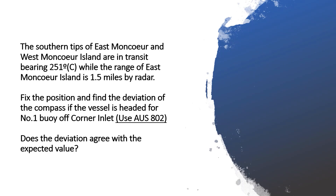The expected values are normally provided to us in a deviation card, which is posted next to the steering compass. A deviation card is made once every two years, or if there are major structural changes or major component changes which may affect the deviation. In this question I'll use a compass card relevant to the question, but when you're on ships you can use the deviation card provided on the ship's bridge. Now let's get started.